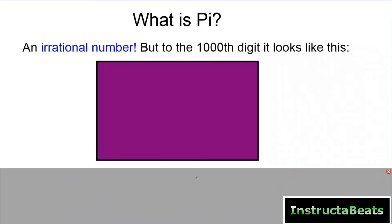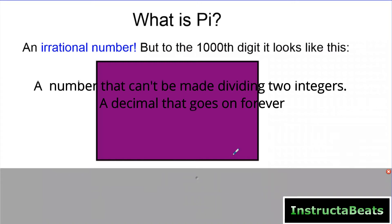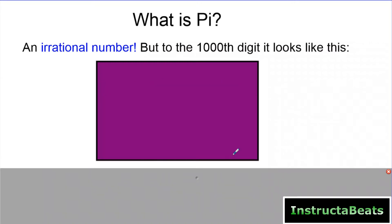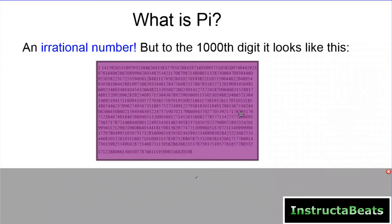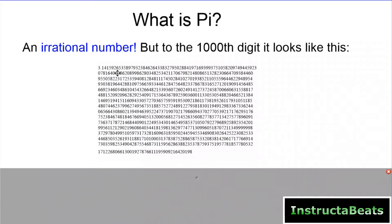So what is pi? Pi is an irrational number. But to the thousandth digit, it looks like this: 3.1459265358979. And I'm not going to keep going. But it's an irrational number. It's a never ending number. It's going to continue to go on forever and ever and ever. Nobody knows the exact amount of pi. They can only approximate it or estimate it because even if you went to the 300,000th digit, it's going to continue to go on.